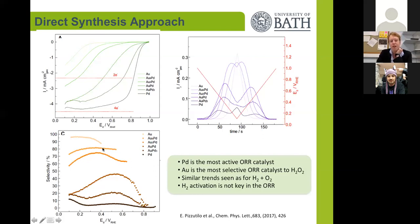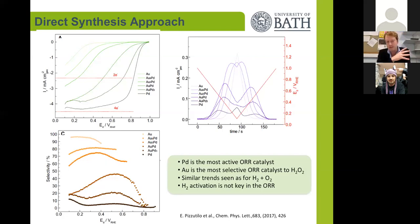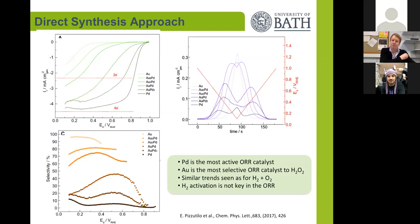Palladium only has a very low selectivity, around 5%, towards hydrogen peroxide. Gold has a very high selectivity towards hydrogen peroxide, so we see similar trends. But the volcano curves that we see in direct synthesis are a result of a balance between conversion and selectivity. This shows that we can learn from the electrocatalytic experiments and transfer this to the direct synthesis, bearing in mind that hydrogen activation is not a key factor in this set of experiments.